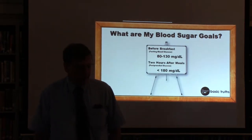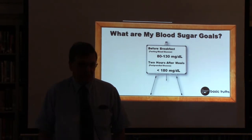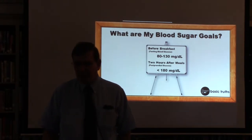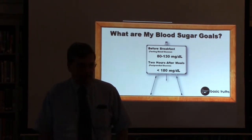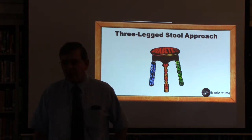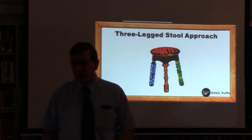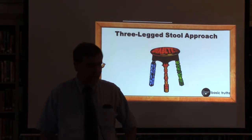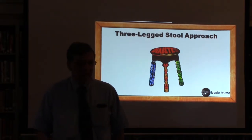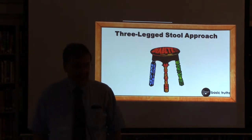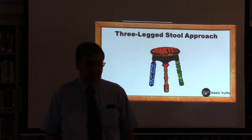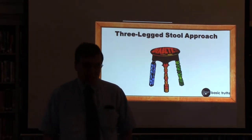So what should your blood sugar be? Your fasting blood sugar before you eat anything in the morning should be between 80 and 130. Your postprandial blood sugar, an hour or two after you eat, should be no higher than 180. We control diabetes using a three-pronged approach — the three-legged stool approach. The three legs stand for healthy eating, exercise, and medications. Each of those is as important as the other. Notice that two of those three are totally under your control, and taking your medications is pretty much under your control too.